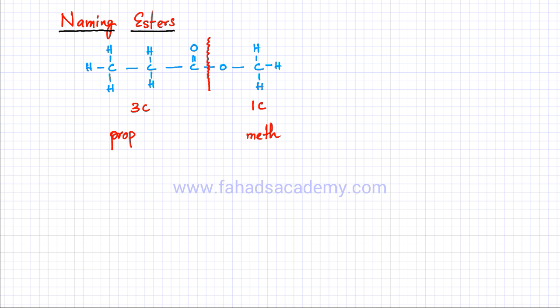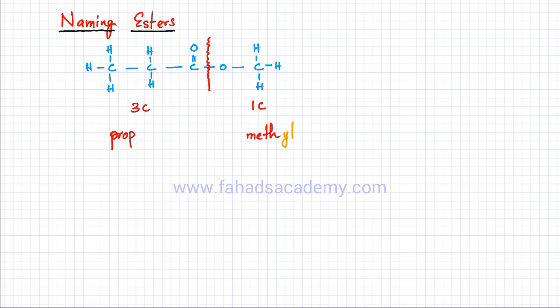Now, how would the name end — what is the suffix going to be? The side which has a single bond O, derived from the alcohol, is going to end with '-yl,' so it's going to be 'methyl.' The side that has C double bond O, derived from the carboxylic acid, had three carbon atoms, so the name starts with 'prop' and is going to end with '-anoate.'